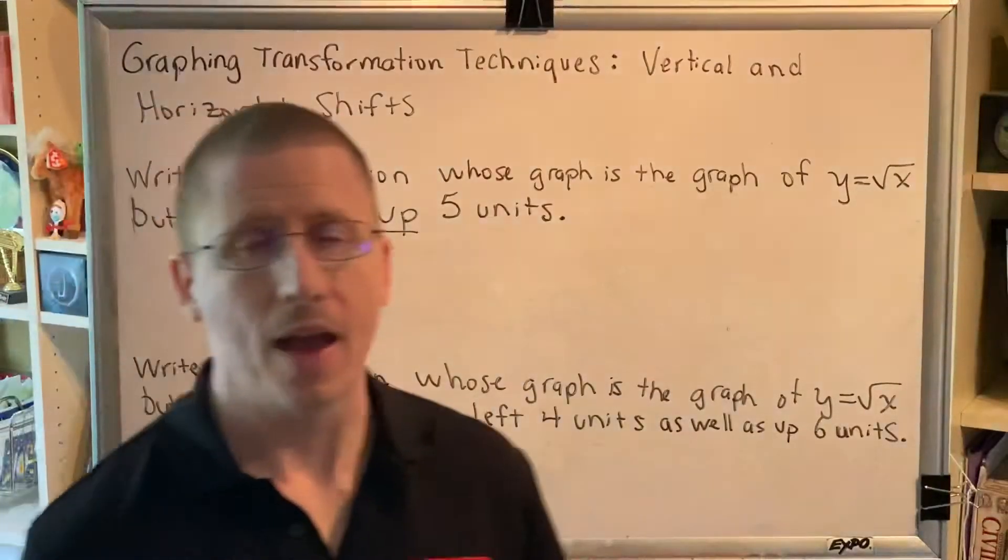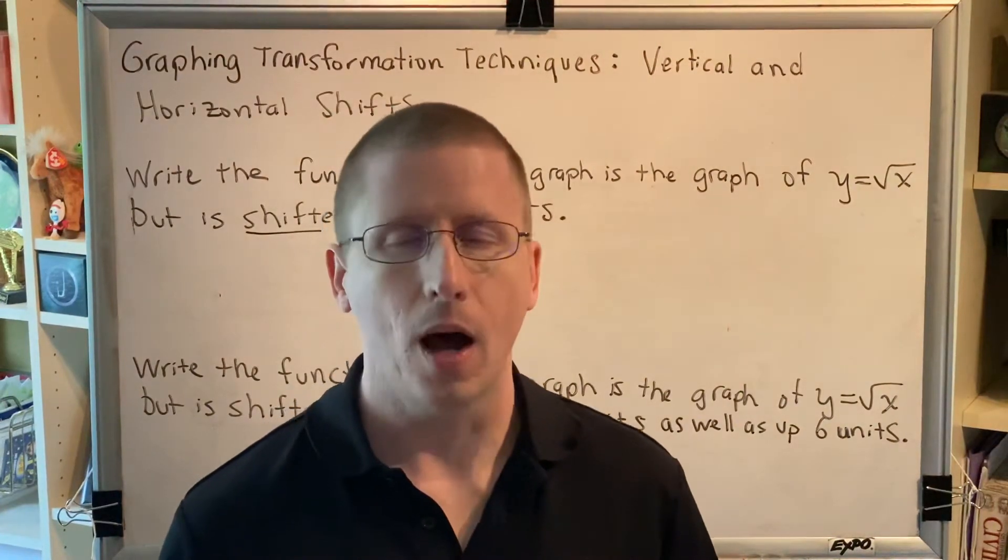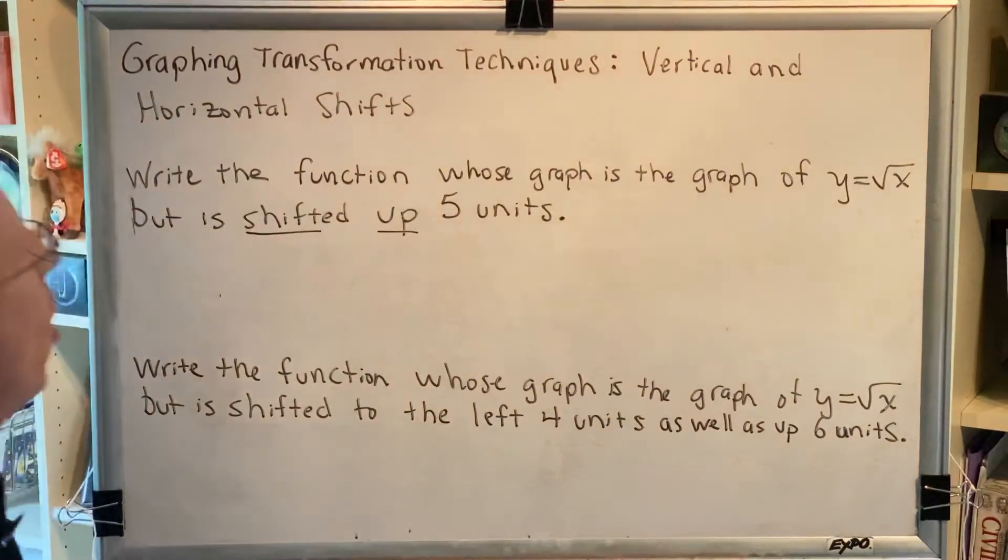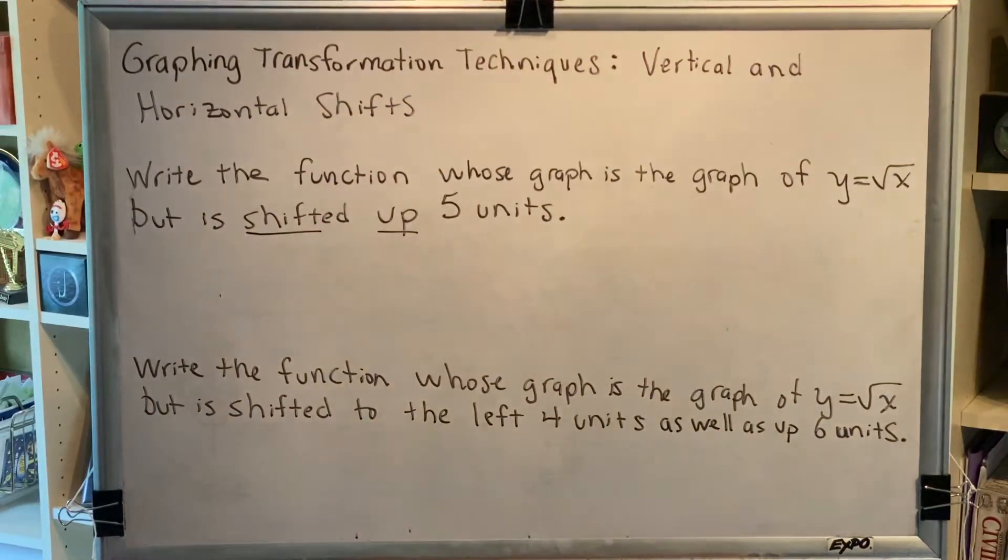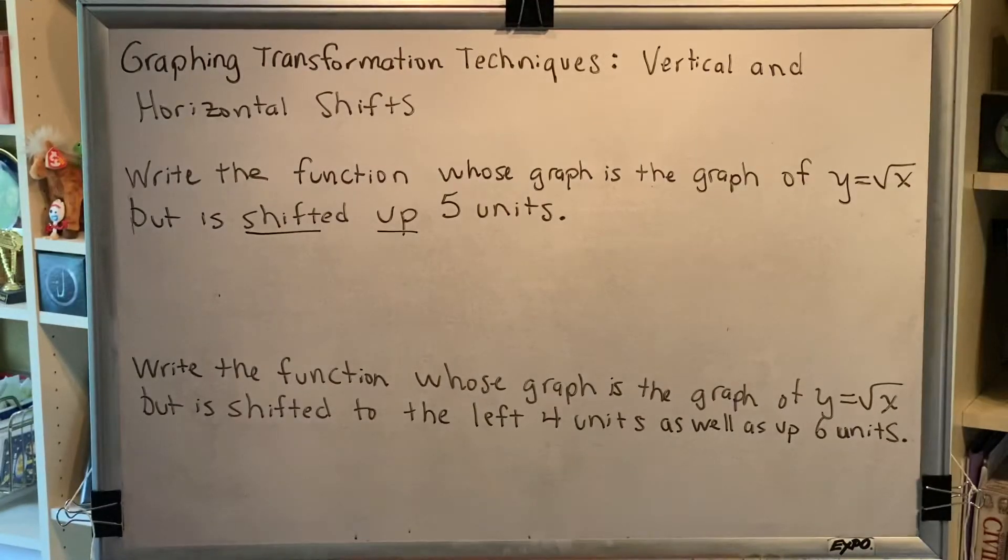Vertical shifts behave exactly the way you would expect. Up is positive, and we know that for a vertical transformation we are going to add or subtract a number on the right-hand side of our equation.